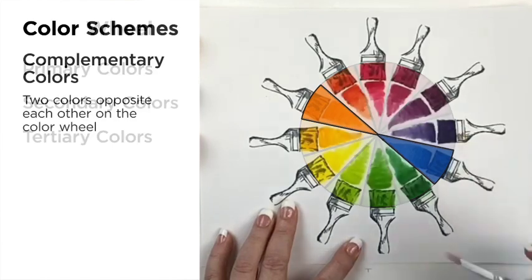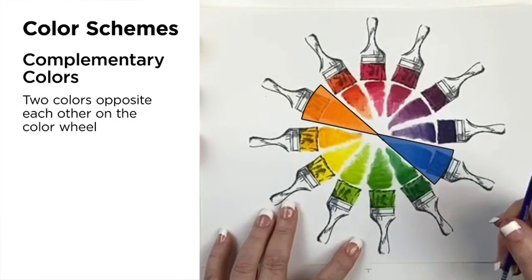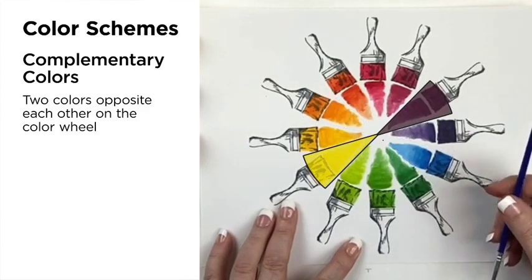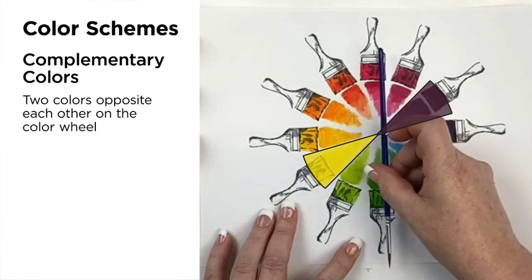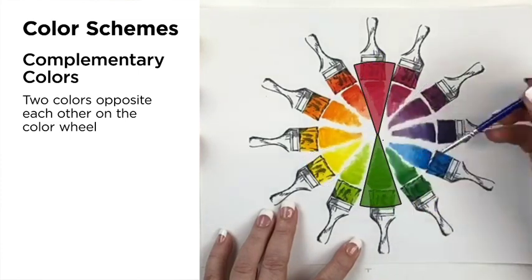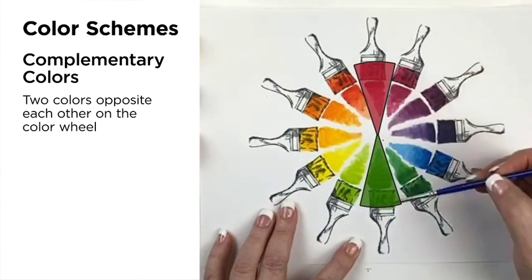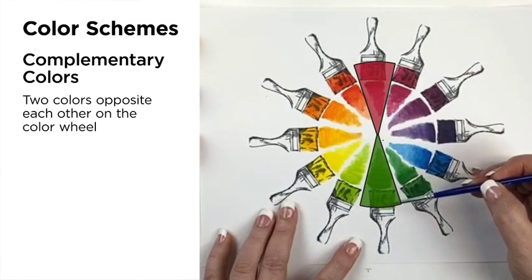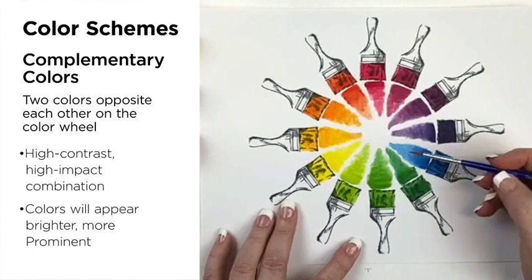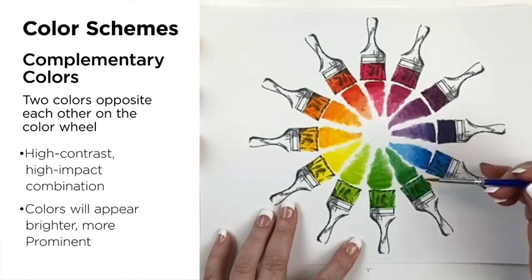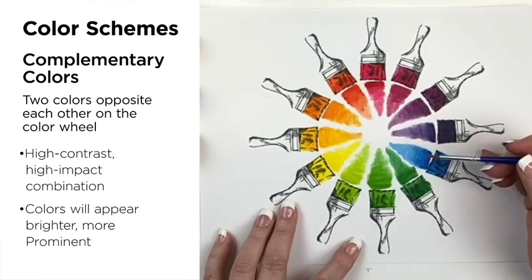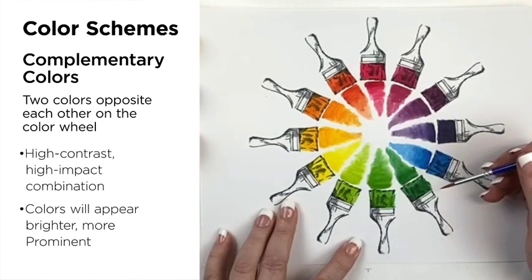A complementary color scheme is two colors that are opposite each other on the color wheel, like red and green. This combination provides a high contrast and high impact color combination, and together these colors will appear brighter and more prominent.